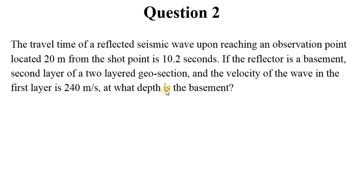In other words, we're looking for z or h for the depth. We are talking about a shot point and an observation point where we have geophones, so that distance is given as 20 meters. We are told that the travel time t is 10.2 seconds, and the velocity on the upper layer just before you get to the basement is 240 meters per second.